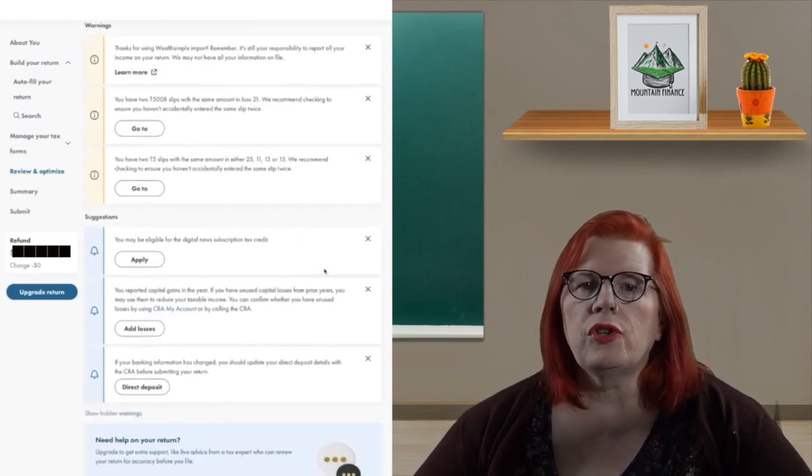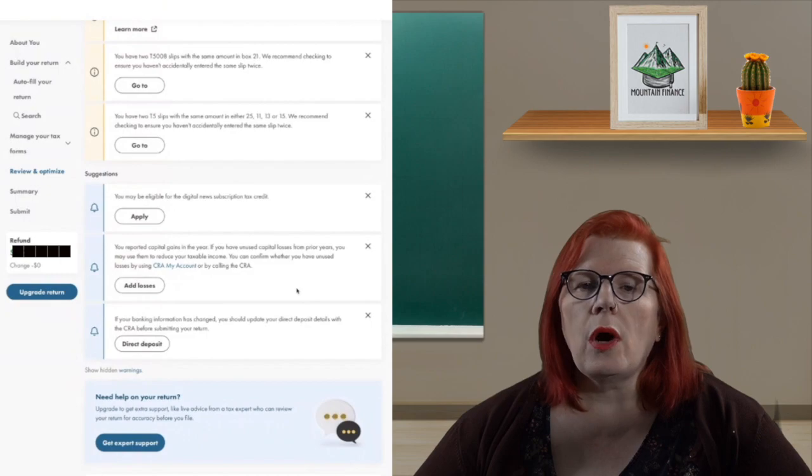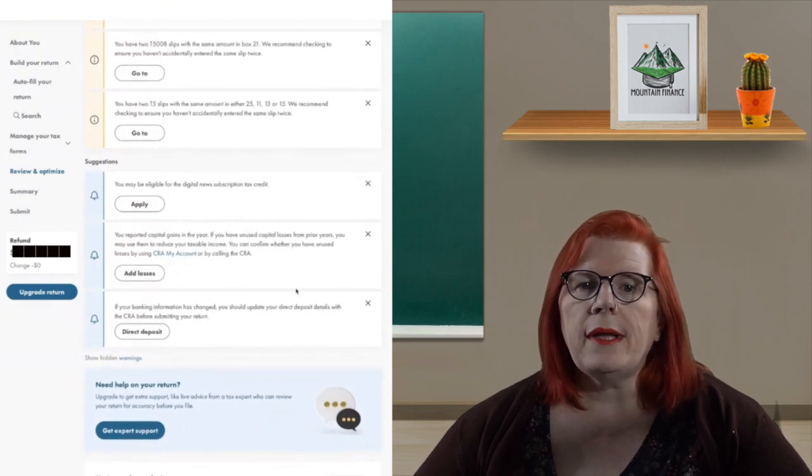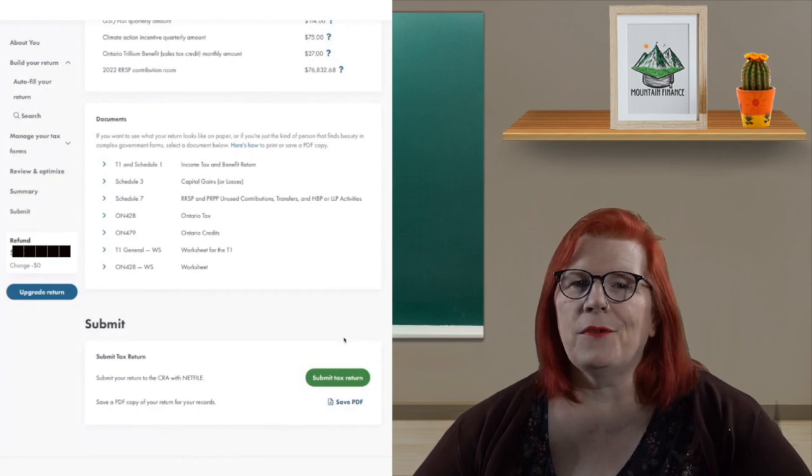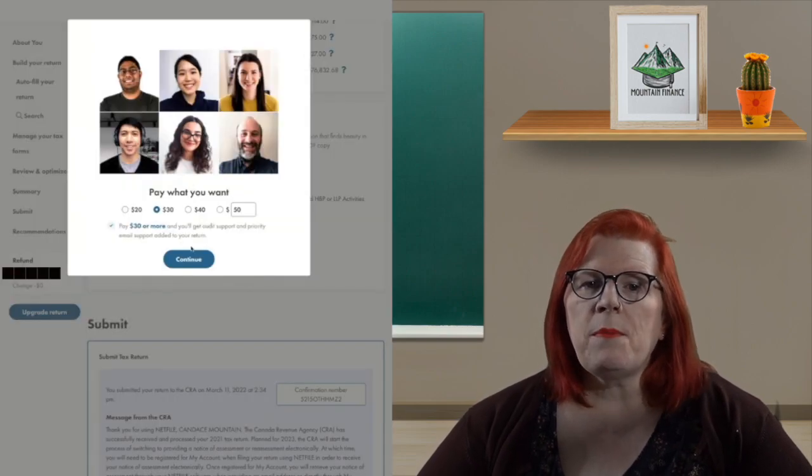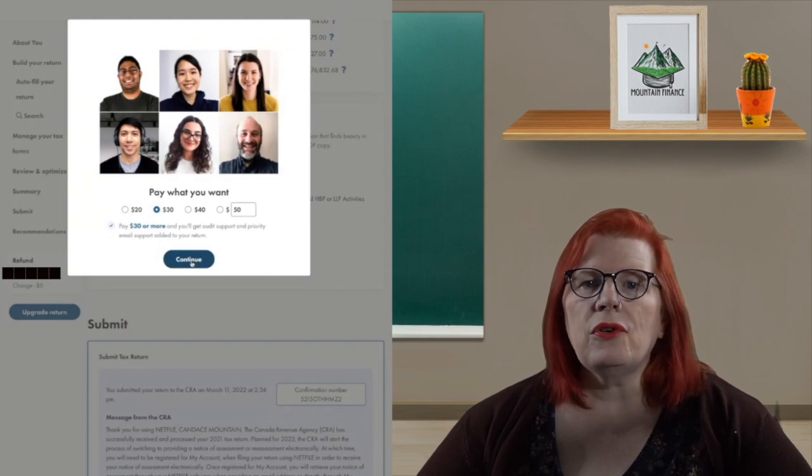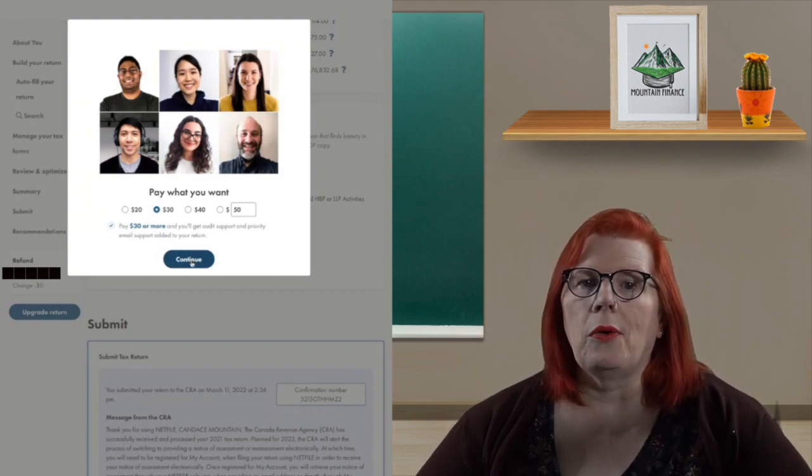Once you return to the Review page without any errors, you are ready to go. Just scroll down and click on submit taxes. Then you decide how much you are going to pay. The last box, you can write in whatever you want, including zero if you choose.